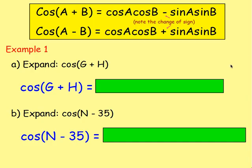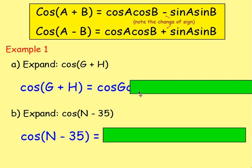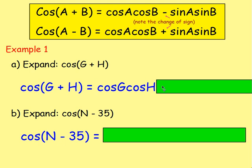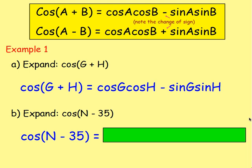You need to know them inside out. So let's begin. Example one: expand cos G plus H. So if you want to expand cos something plus something, here we've got cos A plus B, that is the same as cos A cos B minus sin A sin B. All we're doing is swapping A and B for G and H. So that's the same as cos G cos H — and because it's plus here, it will be minus — then sin G sin H. And that's all you do.